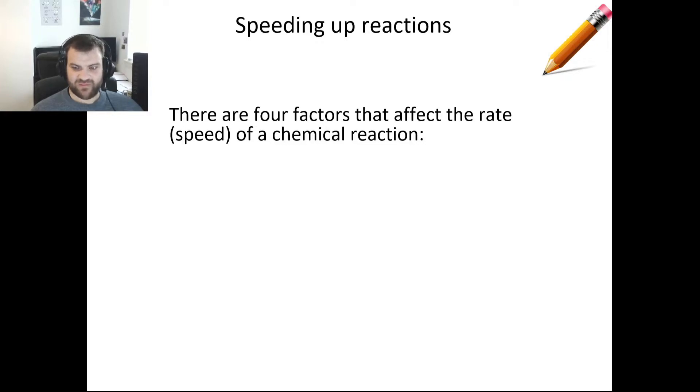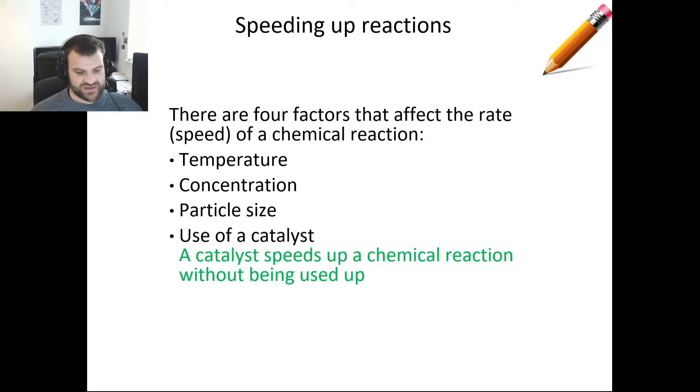There's four ways we can speed up a chemical reaction: these are temperature, concentration, particle size, and also using a catalyst. Another thing that you might be asked about is the definition of a catalyst, where a catalyst speeds up the chemical reaction without being used up.